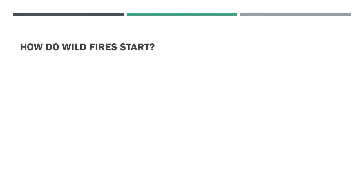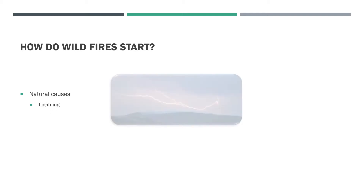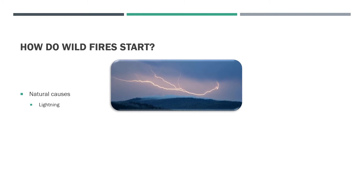How do wildfires start? Wildfires have many causes that can be largely divided into two categories. The first is natural causes. There's only one primary cause of natural wildfires and that is lightning. That being said, there are numerous factors which influence its ability to create large-scale fire.